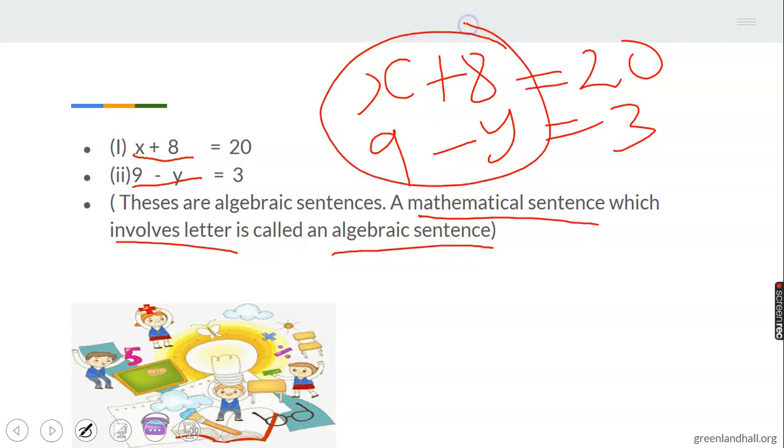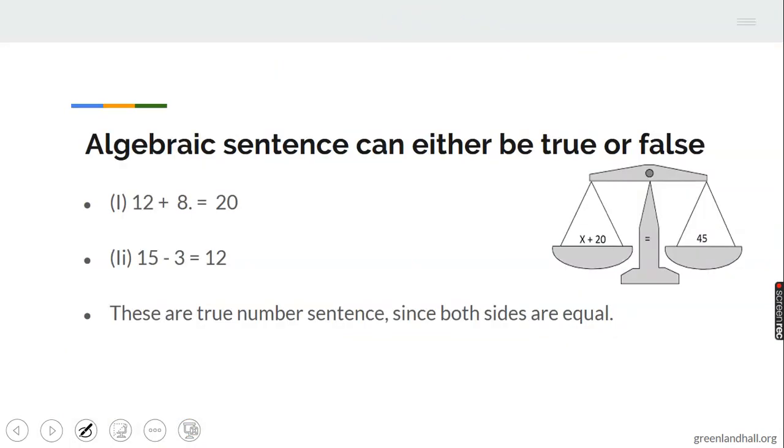The ones that have letters and numbers are called algebraic sentences. The ones with no letters, just numbers, we call them number sentences. This is just a number sentence, like 9 plus 3 equals 12, while these here are algebraic sentences.